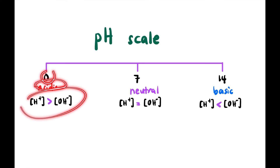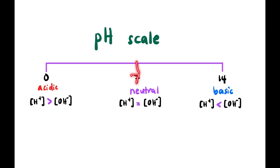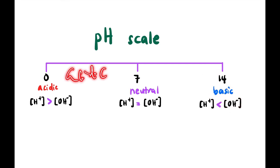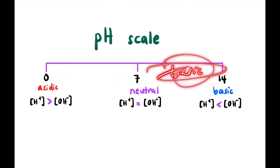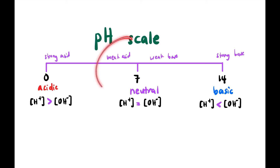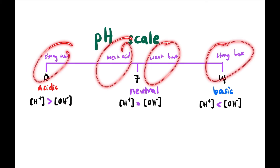Now let's look at the pH scale. The scale has acidic, neutral, and basic regions. In the acidic region, the concentration of H⁺ is higher than OH⁻; at neutral they are equal; in the basic region, H⁺ concentration is lower than OH⁻. On the left of neutral is the acidic region; on the right is the basic region. Closer to pH 14 is a stronger base; closer to pH 7 from the right is a weaker base. On the left, closer to pH 7 is weak acid and closer to pH 0 is strong acid.